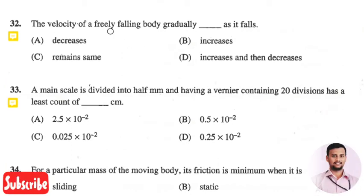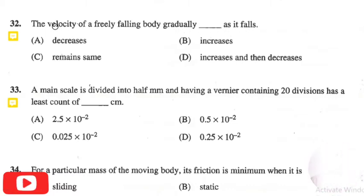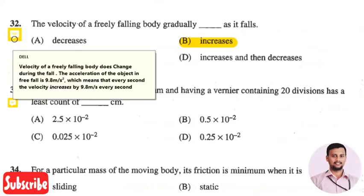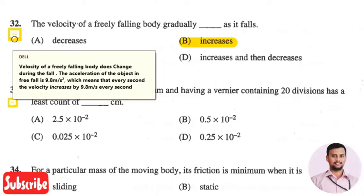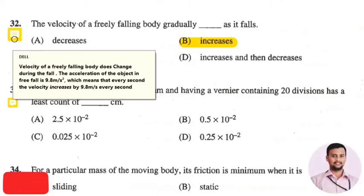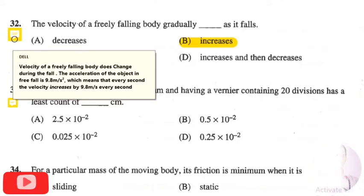The next question is: the velocity of a freely falling body — it gradually increases as it falls, so the right answer is: increases. The acceleration of an object in free fall is 9.8 m/s², which means for every second the velocity increases by 9.8 m/s. So as it falls, the velocity keeps increasing by 9.8 m/s each second.